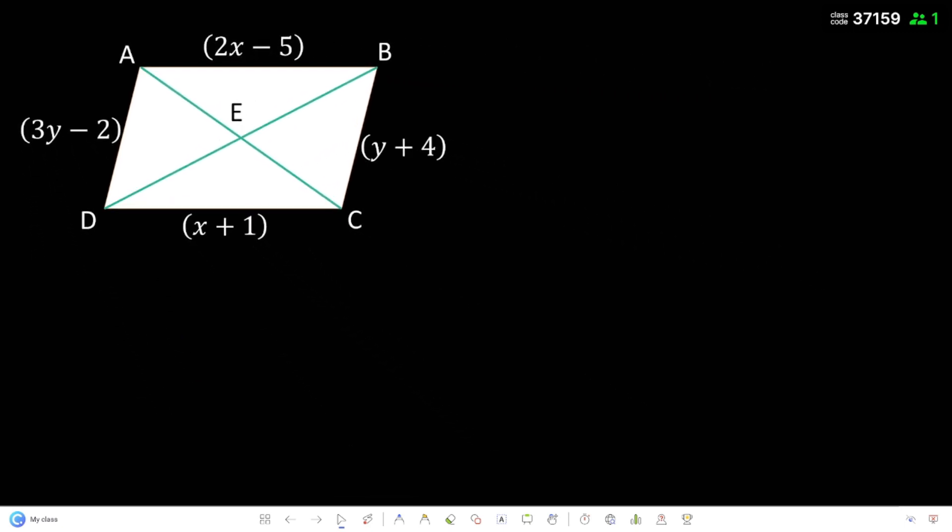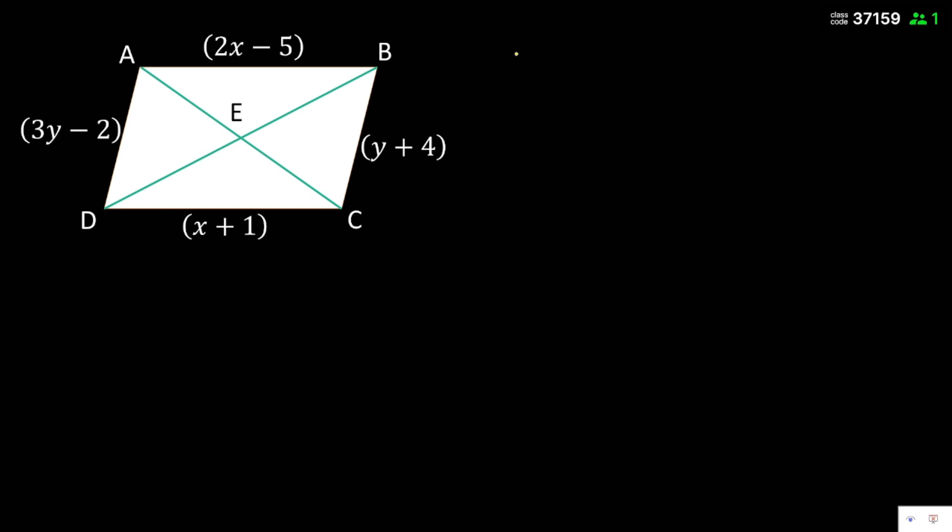Now, solve natin yung measurement ni line segment AB and line segment DC. Lamin natin kung ano ang sukat nito. Since AB equals to 2x minus 5 and DC is equal to x plus 1, pakagawa tayo ngayon ng equation nito. Since line segment AB is congruent to line segment DC.